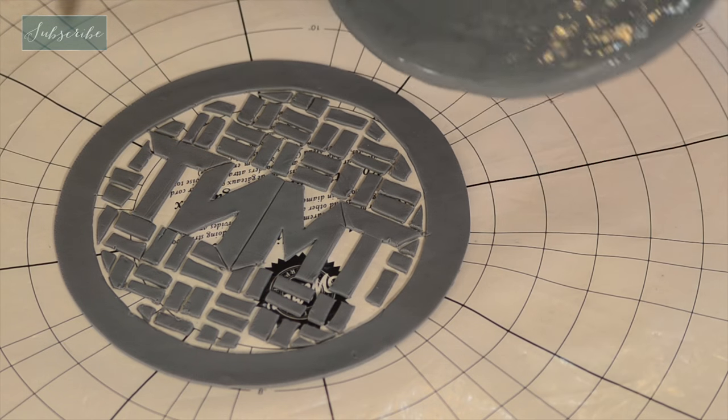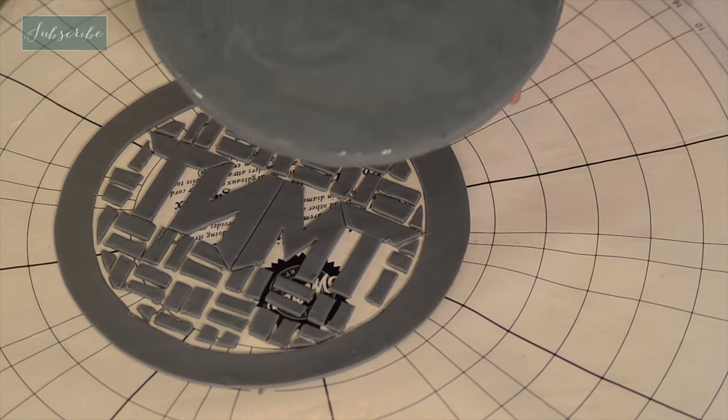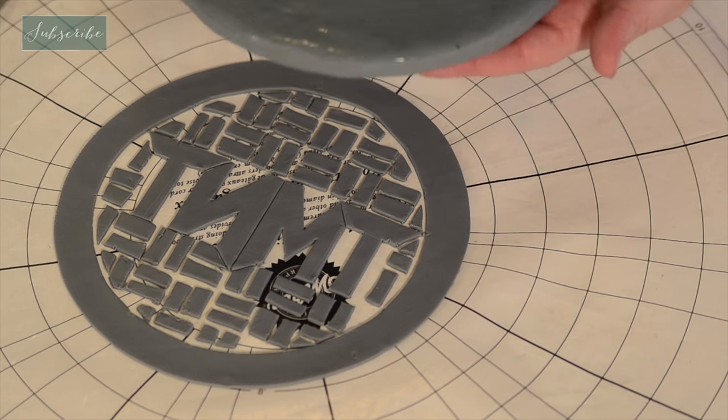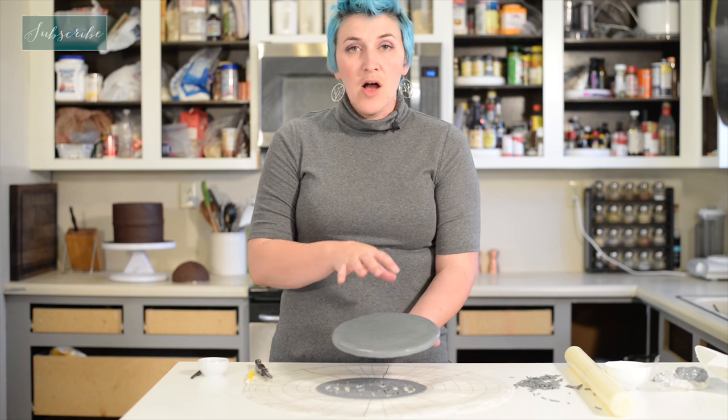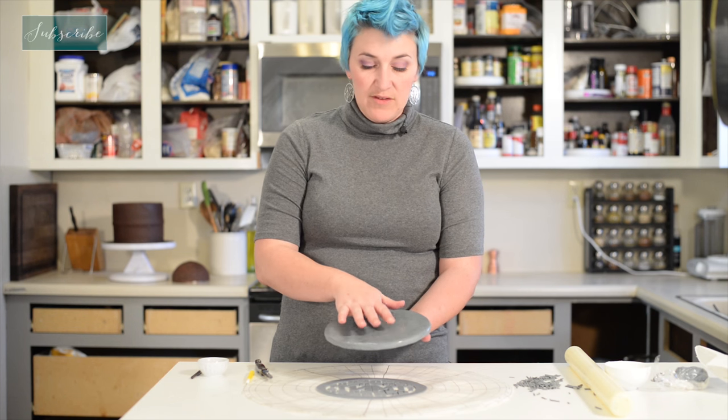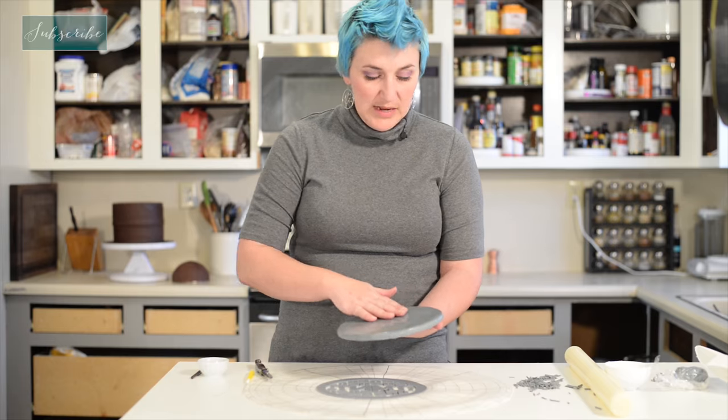So our board is nice and wet. You can see it's all shiny, and as that alcohol evaporates, it's actually going to leave the fondant nice and tacky, and that's what's going to make it stick.